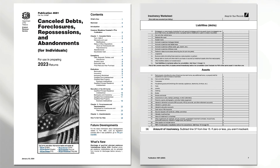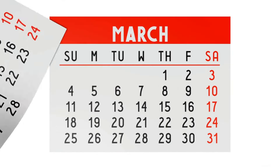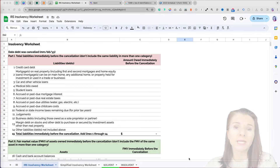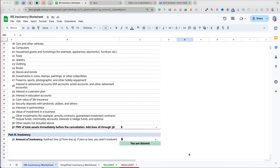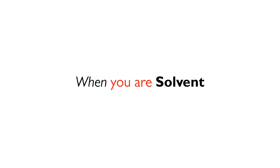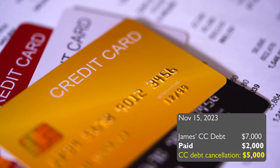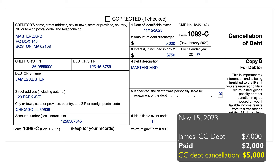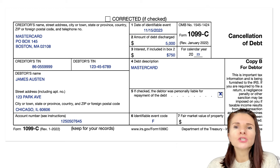So if your credit card debt was cancelled on November 15, 2023, you would need to determine whether you were solvent right before and as close as possible to that date. I have created a Google Sheets file of the insolvency worksheet that you can use. James made a deal with his credit card company to pay $2,000 on his $7,000 MasterCard credit card balance, and the company agreed to take it as payment in full. In January of 2024, he received a Form 1099-C reporting $5,000 in Box 2. Before the cancellation of debt is considered income, James would have to see whether he was solvent immediately before the debt was cancelled.